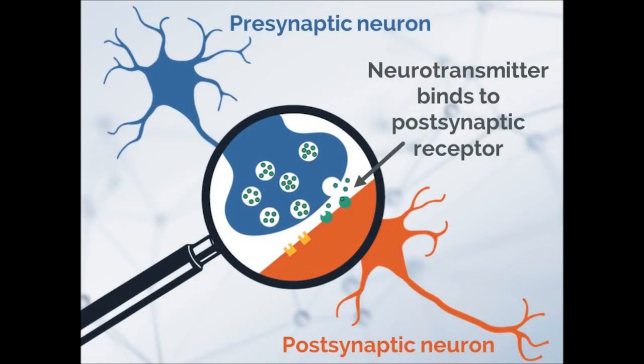Now let's take an even closer look at the synapse. The presynaptic neuron communicates with the postsynaptic neuron by releasing chemicals, referred to as neurotransmitters, which bind to receptors on the surface of the postsynaptic neuron. The types of neurotransmitters released and the types of receptors present determine the type of communication that can occur. If we liken this to our own communication, our words are like the neurotransmitters, relaying our message to another person. Each word has a different meaning, much like the different types of neurotransmitters — for example, yes communicates a very different message from no.